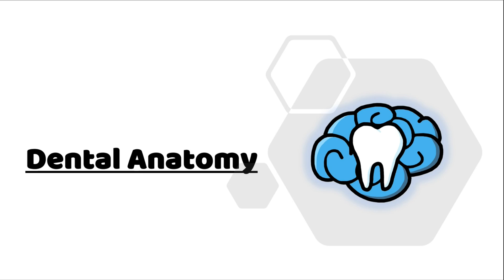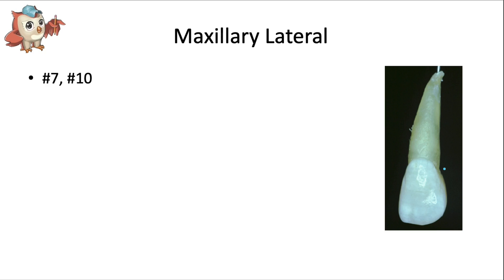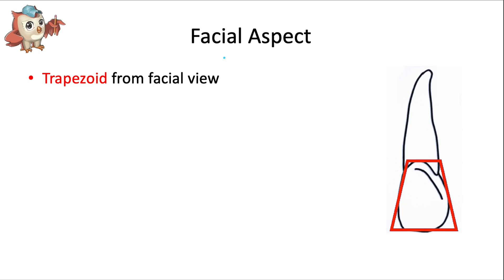Hey everyone, Dr. Ryan here and welcome back to our dental anatomy series. In this video I'll be talking about the maxillary lateral incisor — the permanent maxillary lateral incisor. Using the universal tooth numbering system, this would include tooth number 7 and number 10.